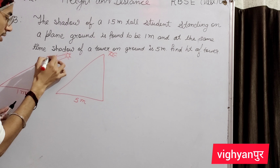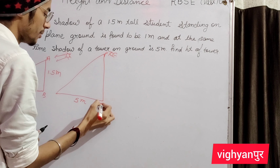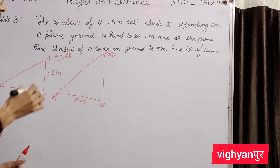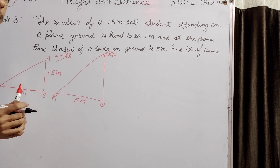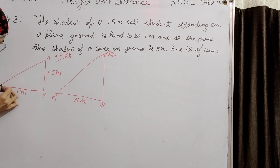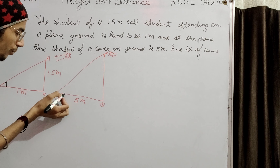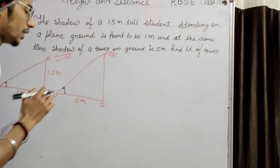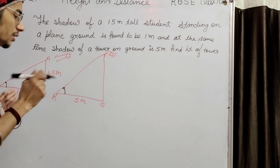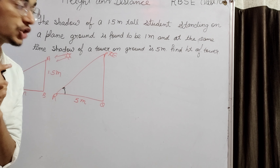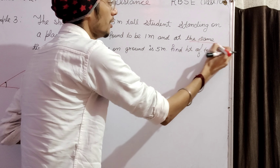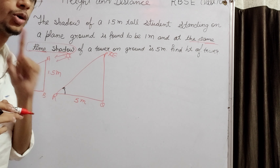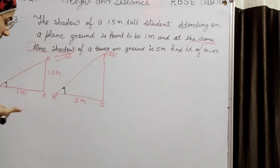Let points be A, B, C and P, Q, R. The key concept here: since both shadows are measured at the same time, the angle of elevation will be the same in both cases. So we simply equate the angle of elevation in both figures.